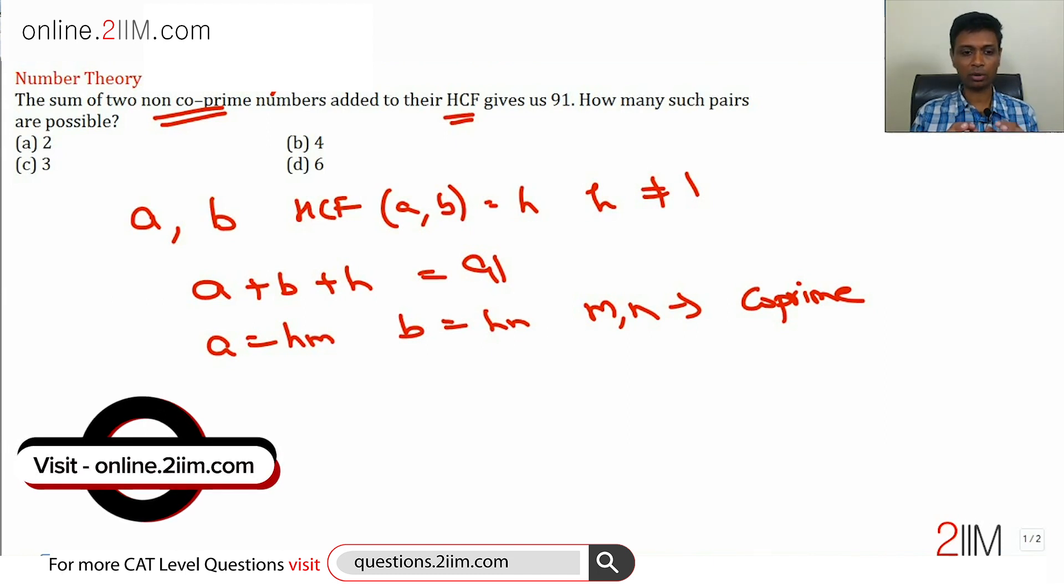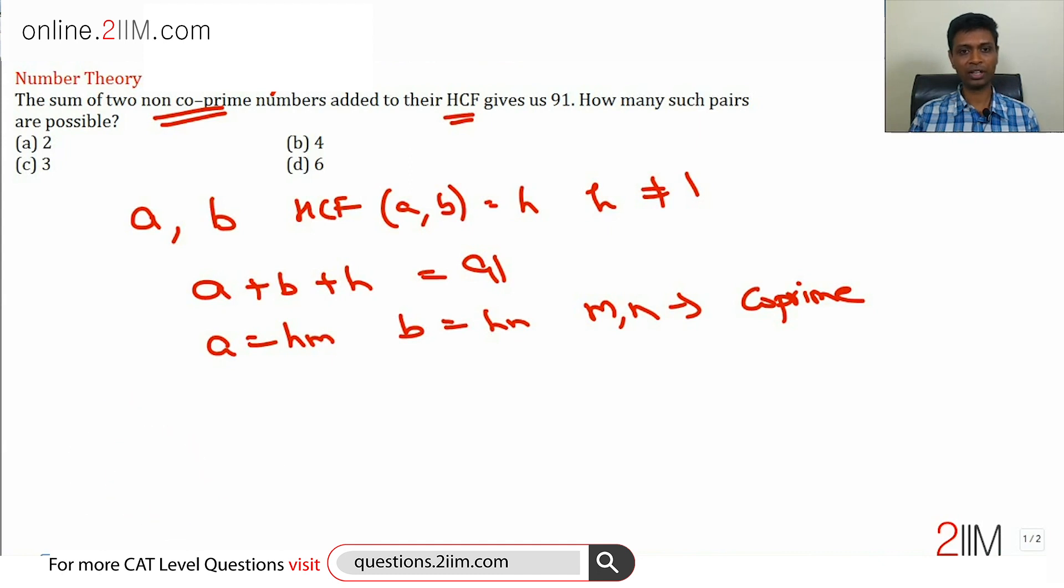The moment we have two numbers a and b with the HCF of h, we can write a as h into m, b as h into n. I can take HCF as a factor of both numbers. So m and n are natural numbers here. But m and n cannot have anything in common. Because if they had something in common, that common thing would also have been extracted and been put into h.